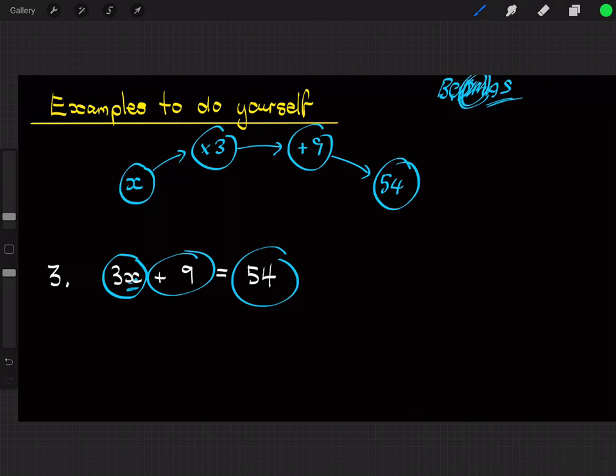Okay, so now let's come back the other way. So 54 minus 9, then divided by 3, should give us our answer. So let's do that: 54 minus 9 is 45.